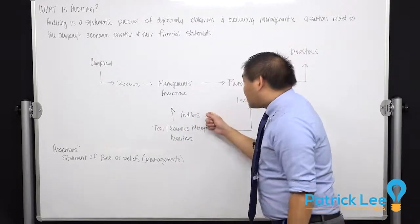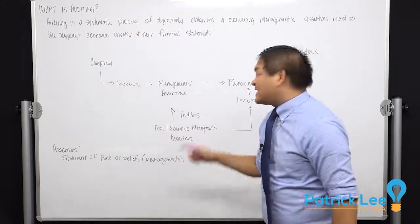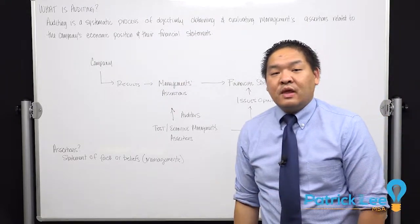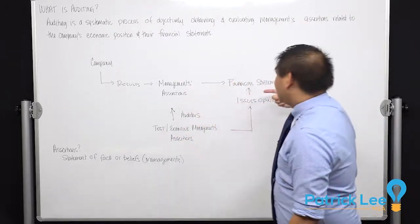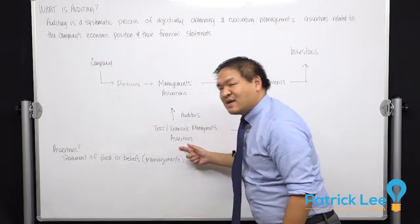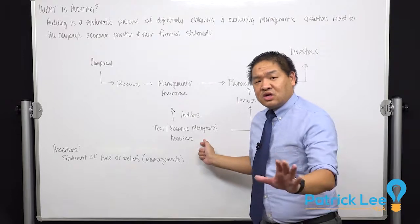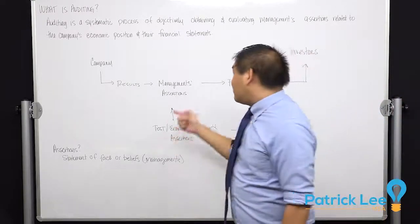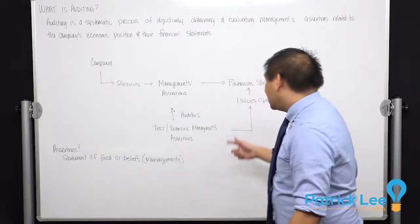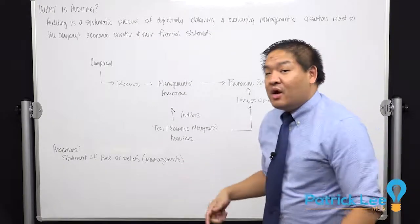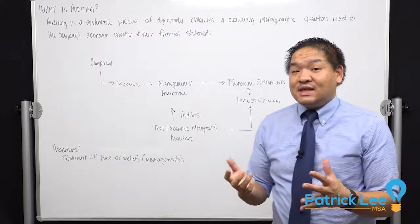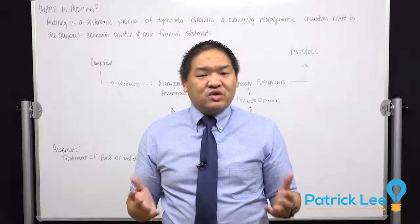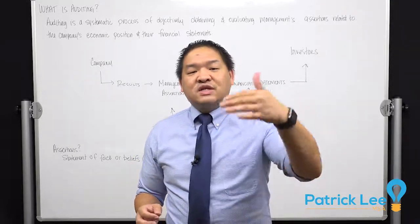That's where the auditors come in. The auditors are going to test and examine these assertions. If they pass our tests, then we're going to issue an opinion on these financial statements. We're taking management's assertions in the form of the financial statements, testing them, examining them, and if there are no material misstatements, we're going to issue a good opinion and release them to investors. If we don't like what their assertions are, we're going to issue a bad opinion, and investors are going to see our opinion and say these financial statements should not be relied on.